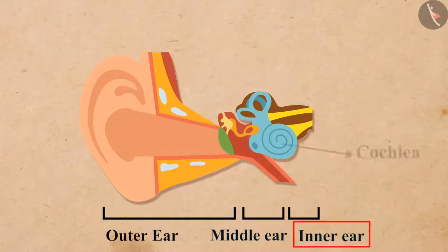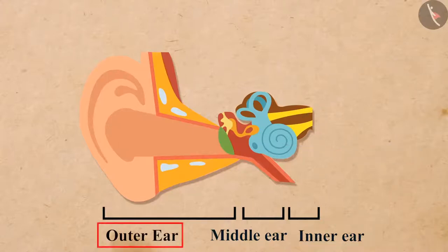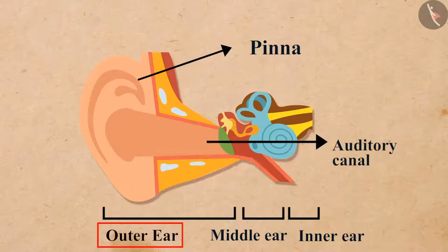The inner ear includes the cochlea and the auditory nerve. The pinna of the outer ear collects the sound from the surroundings and then it passes through the auditory canal.